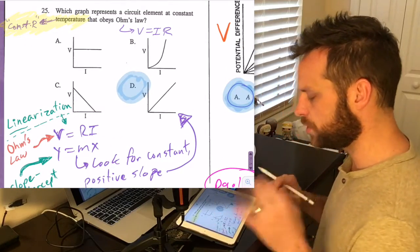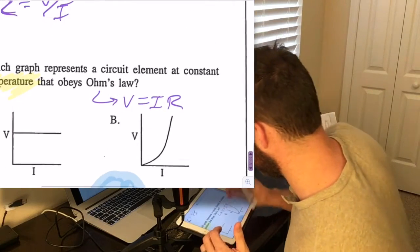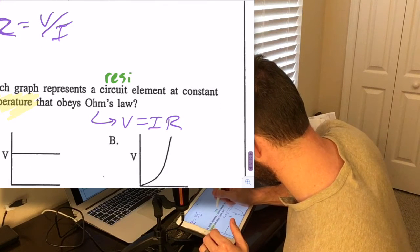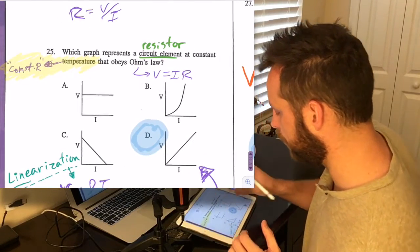Number 25 says which graph represents a circuit element, or what we could also commonly call a resistor, at constant temperature.